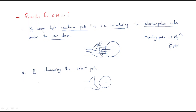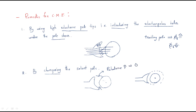The next remedy is chamfering of the salient pole. A normal pole has a uniform pole gap, but chamfering means the pole gap between the pole and the armature increases at the edges. Chamfering of the pole increases reluctance. When reluctance increases, flux decreases — same procedure. So chamfering of the salient pole is another method to reduce the cross-magnetizing effect.